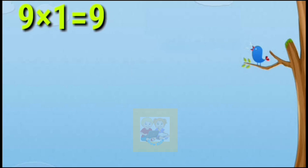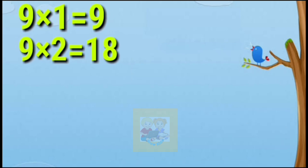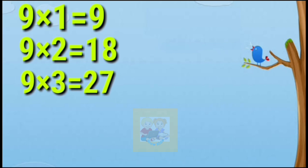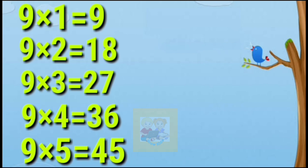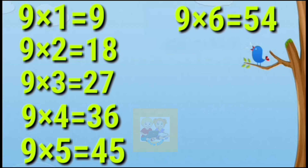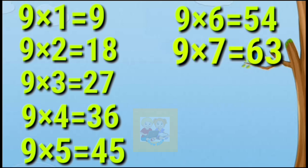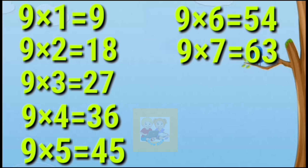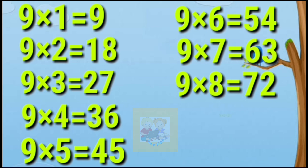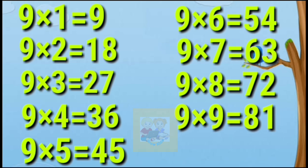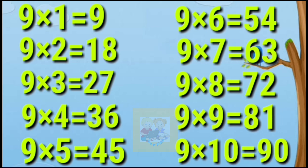Nine ones are nine. Nine twos are eighteen. Nine threes are twenty-seven. Nine fours are thirty-six. Nine fives are forty-five. Nine sixes are fifty-four. Nine sevens are sixty-three. Nine eights are seventy-two. Nine nines are eighty-one. Nine tens are ninety.